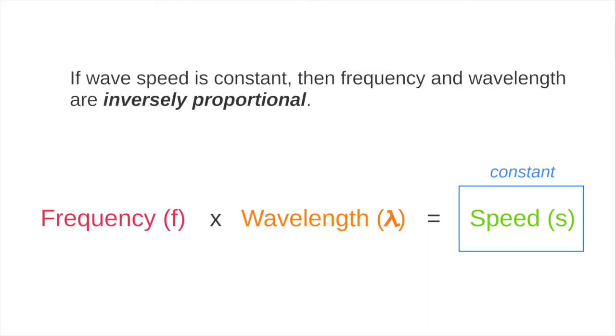This equation tells us that if the speed of a wave is constant, then frequency is inversely proportional to the wavelength. That means if frequency increases, then wavelength must decrease to keep the same speed.